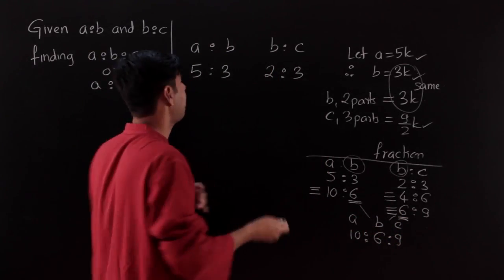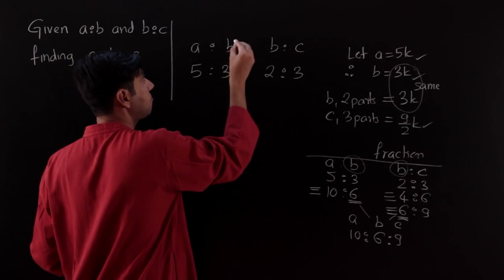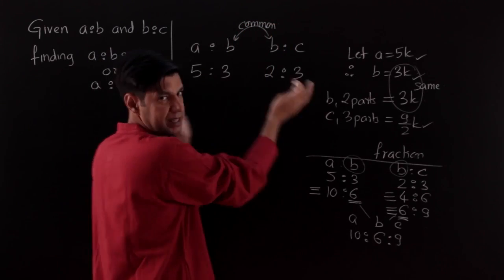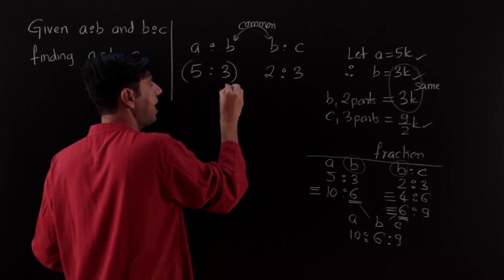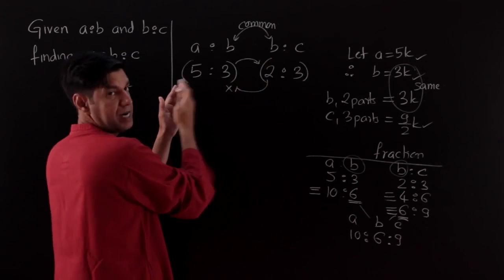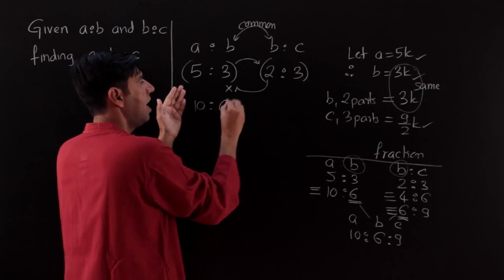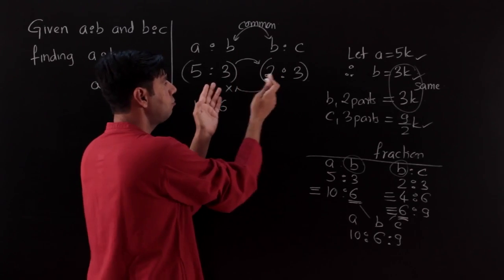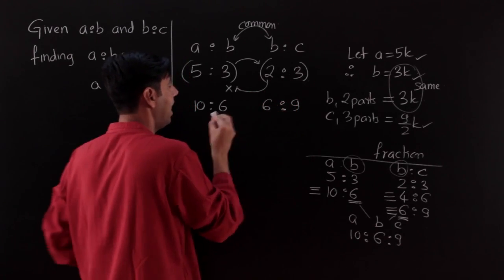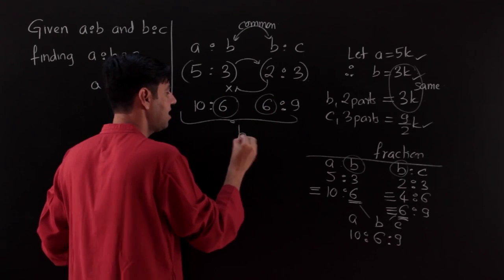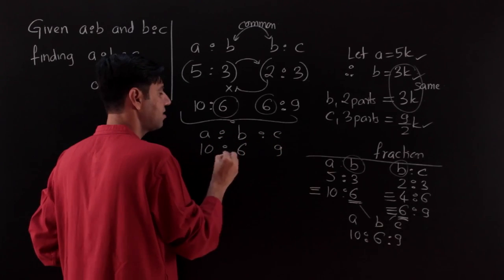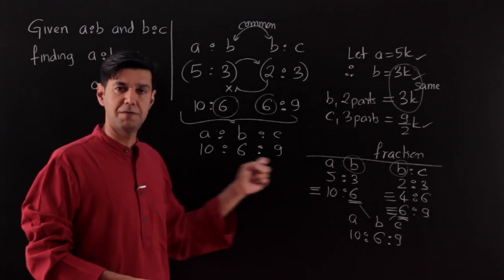The method is: first identify what is common. B is common, so we multiply the first ratio by 2 to get 10 to 6, and multiply the second ratio by 3 to get 6 to 9. Now B is equal in both, so we condense: A is to B is to C equals 10 is to 6 is to 9. If the question asks only for A to C, the answer is 10 is to 9.